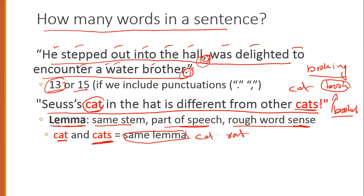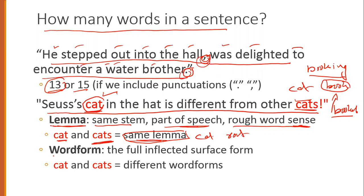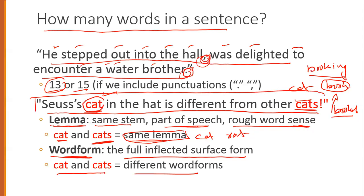When you count corpus words, you can count by root word terms. Another concept is the word form — the full inflected surface form. If I count the number of words on the basis of word form, I count through one, two, three, four, five, six, seven, eight, nine, ten — counting each inflected form as distinct.